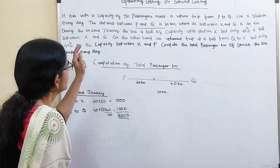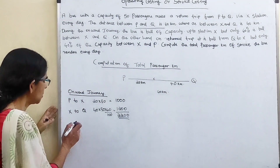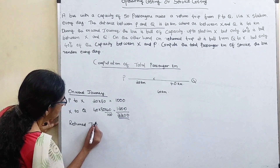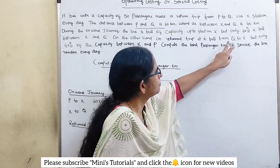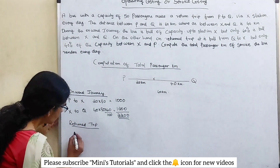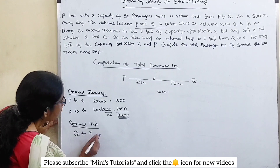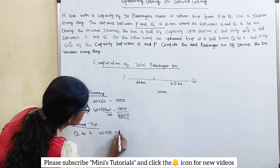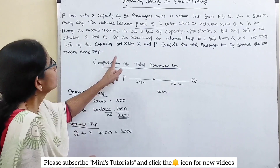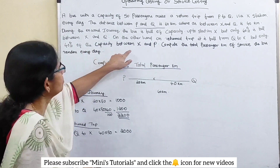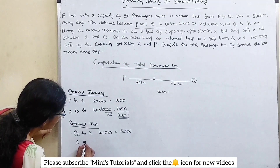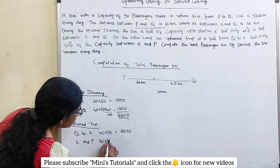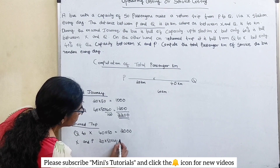On the return trip, the bus is full from X to Q to X — full capacity: 40 into 50 equals 2000 passenger kilometers. But only 40 percent of capacity is filled between X and P: 20 into 50 into 40 divided by 100 equals 400 passenger kilometers.